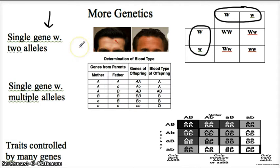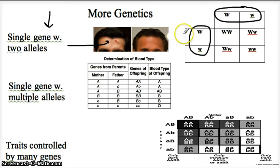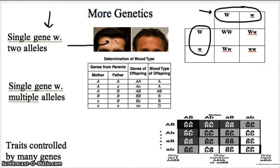The example we're going to use is the Widow's Peak. A Widow's Peak is dominant over a straight hairline. So this particular Punnett square is for a Widow's Peak. If you have somebody who has a Widow's Peak, they could be capital W, small w, where the dominant masks the recessive.